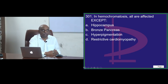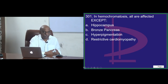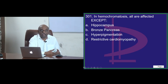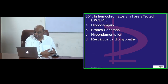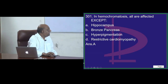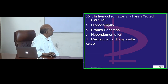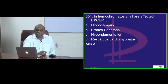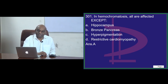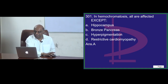First half, we will have a review of the quiz questions. After that, we will go to the discussion. Hippocampus is not affected, but bronzed pancreas, hyperpigmentation, restrictive cardiomyopathy — these are all the features. Very good.